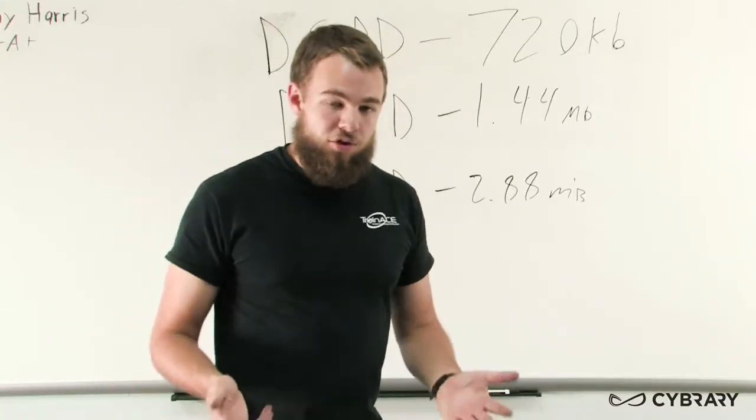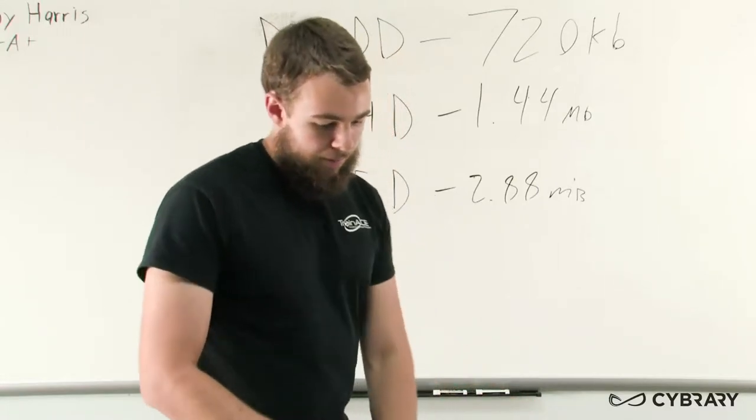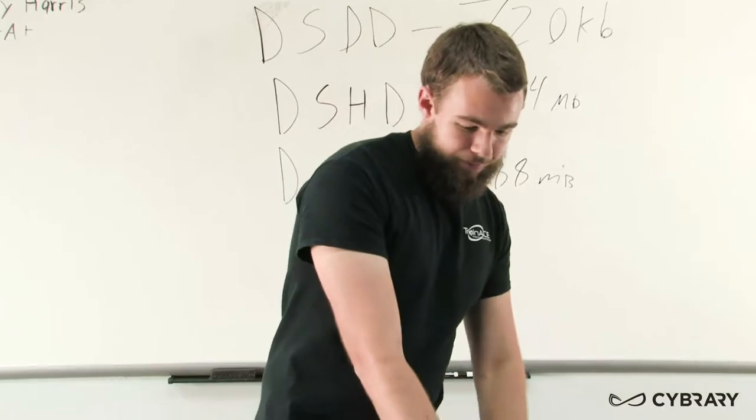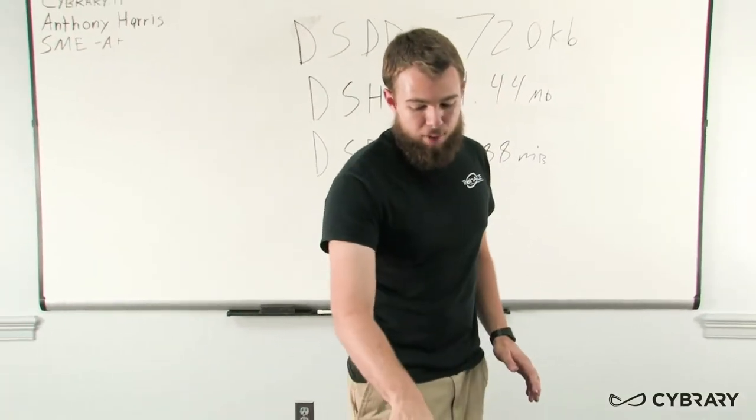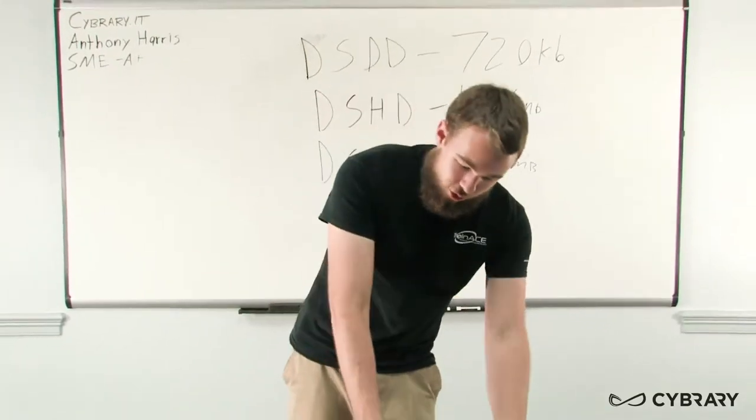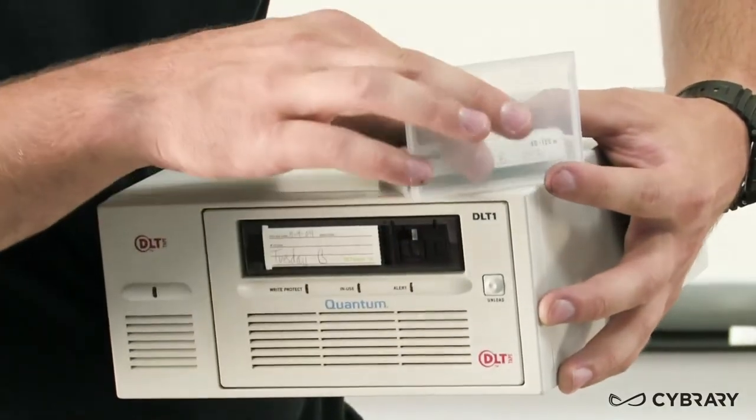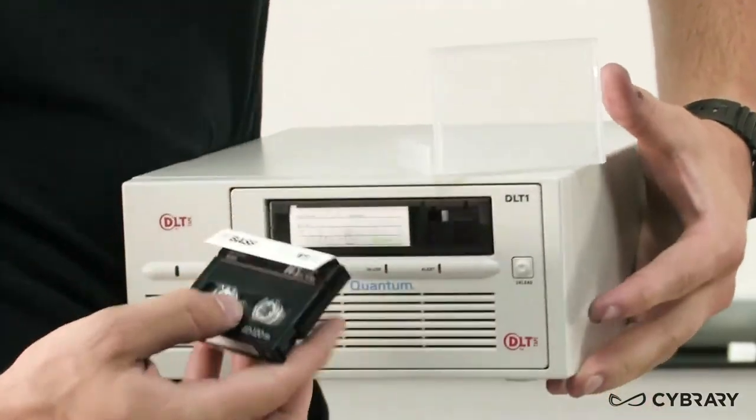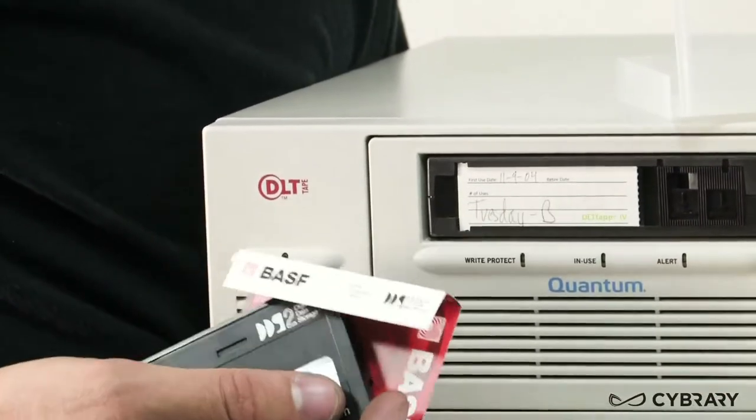The last type of storage device that we want to take a look at is going to be our tape drive. Now, our tape drive is no longer typically used for home purposes or home backups, but we still see it a lot with server situations. This is an example of one of our tape drives here, and the tapes that we insert inside of it look like these. These tapes hold different amounts of information based on the tape type.